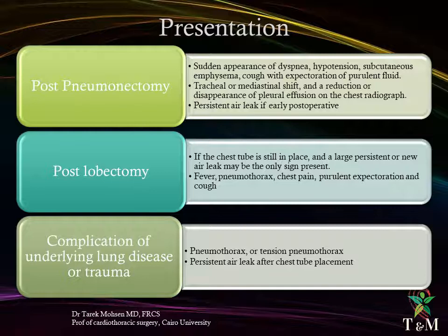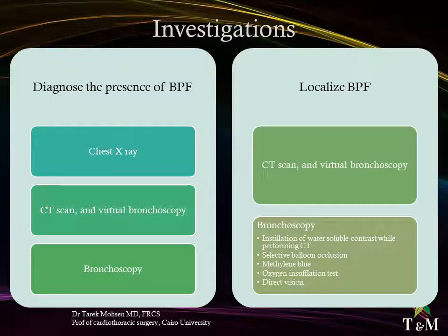Clinical presentation also includes cough with expectoration of purulent fluid and a reduction or disappearance of pleural effusion on chest radiograph. Post-lobectomy, if the chest tube is still in place, a large persistent or new air leak may be the only sign. Other signs include fever, pneumothorax, chest pain, purulent expectoration, and cough. Complications of underlying lung disease or trauma may present with pneumothorax or tension pneumothorax and persistent air leak after chest tube placement.